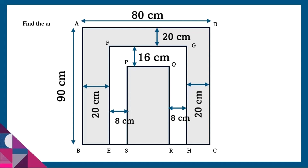Now we can find the total area since they have given the length and breadth. In order to find the area of the shaded region from the whole rectangle ABCD, we need to subtract EFGH and then add PQRS. Now in order to do this, we need to first find the area of the unshaded part so that we can subtract the total from it, then add the other shaded part.